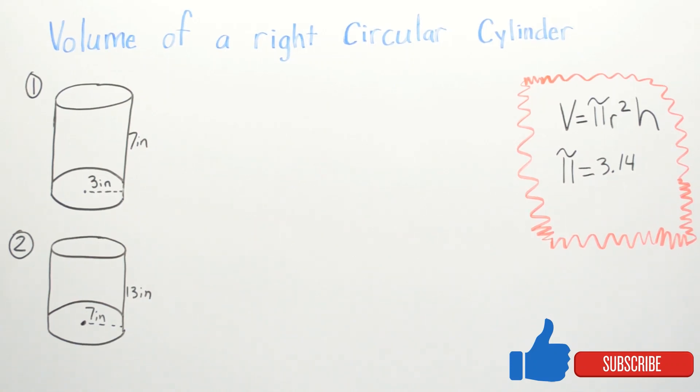In today's video we're going to be working on volume of a right circular cylinder. On the right hand side you can see we have a formula: the volume equals pi r squared times your height. And in this example for pi we're going to be using about 3.14.